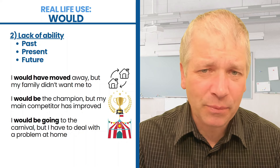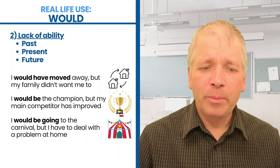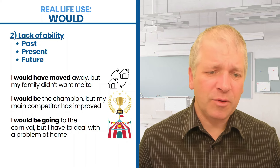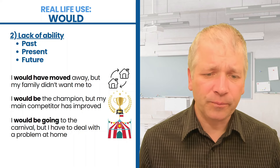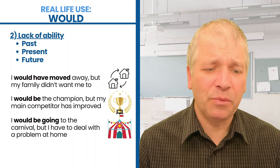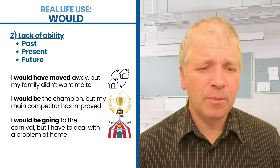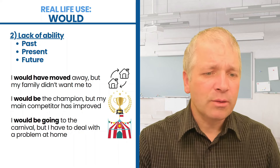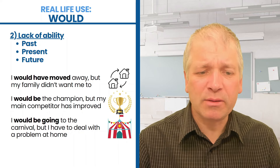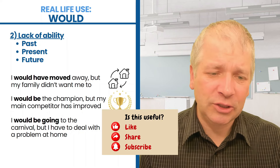This is something that's not always covered when we teach about would, but we often use it in terms of past, present and future when we wanted something to be true, or we wanted to be able to do something, but it wasn't possible. So, first of all, lack of ability in the past. Let's look at these houses — I would have moved away, but my family didn't want me to.